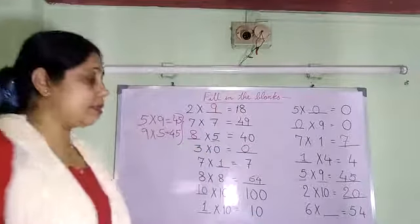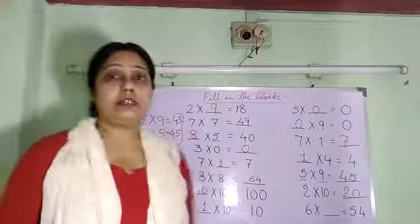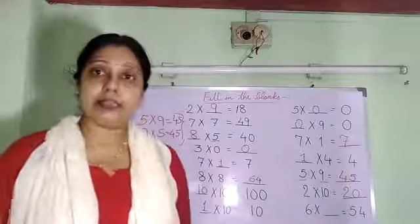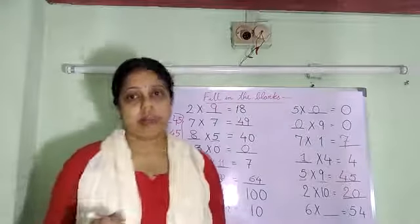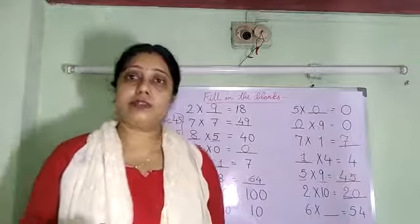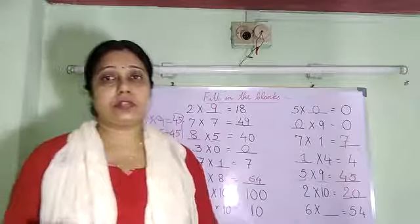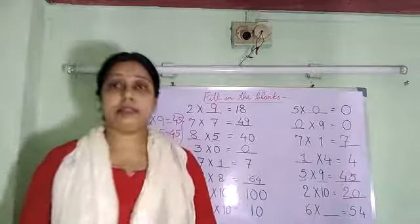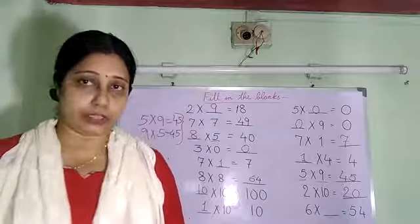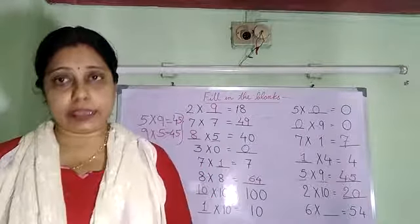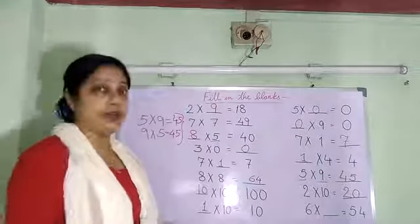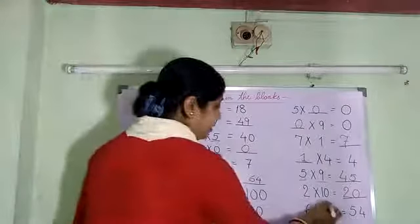The last question: 6 times how much is 54? We will read the table of 6 until 54 is coming: 6 1s are 6, 6 2s are 12, 6 3s are 18, 6 4s are 24, 6 5s are 30, 6 6s are 36, 6 7s are 42, 6 8s are 48, 6 9s are 54. That means we will write here 9.